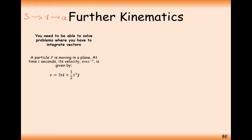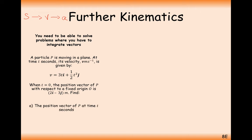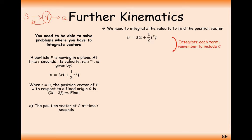In this first example, we have a velocity of 3ti plus half t squared j. At time t equals 0, the position vector with respect to the origin is 2i minus 3j. We need to find the position vector of P at time t seconds. We're at velocity and need to move back to position, which is displacement, so we need to integrate the velocity.